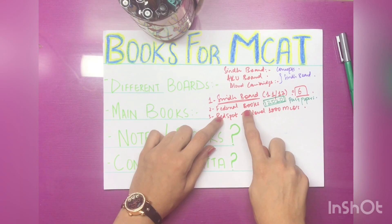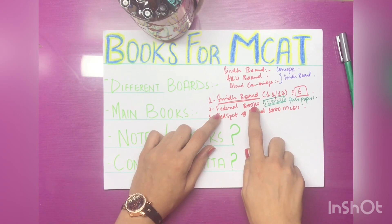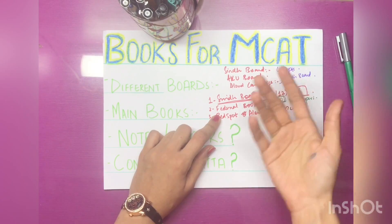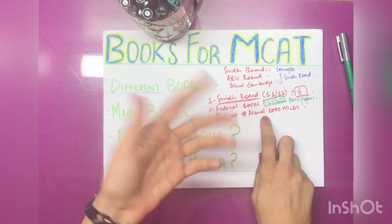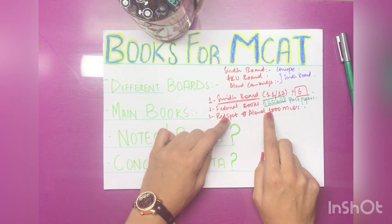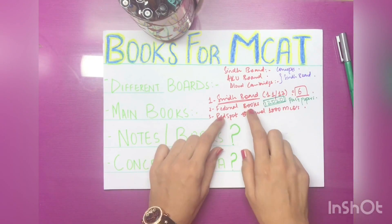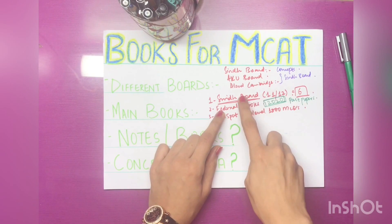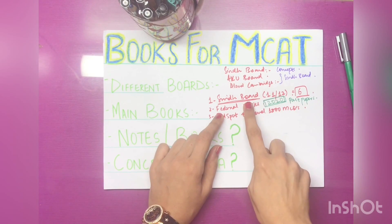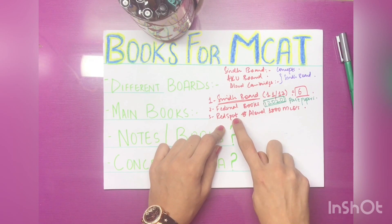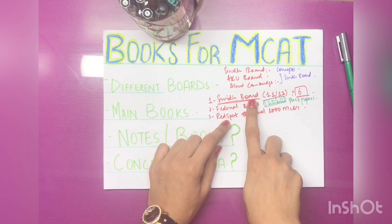Especially for those in 11th and 12th: keep the federal books with you. When I was in AKU board in 11th and 12th, I knew I was going to sit MDCAT. I was building my concepts using federal books alongside my board books. I would study two books per chapter — my own board book plus a federal book — and solve their exercises including the numericals. This helped me build strong concepts early.